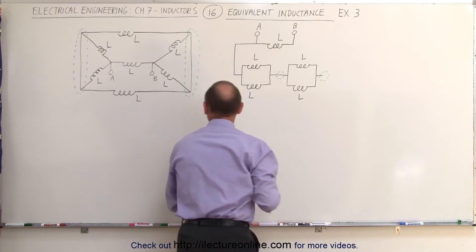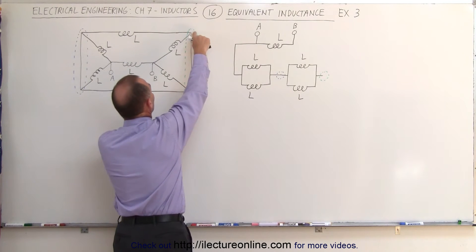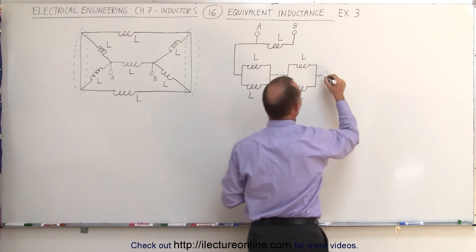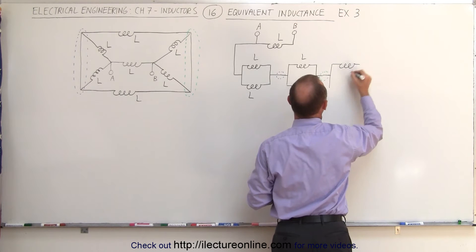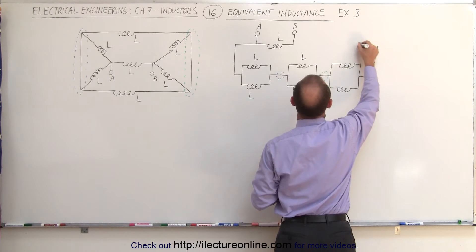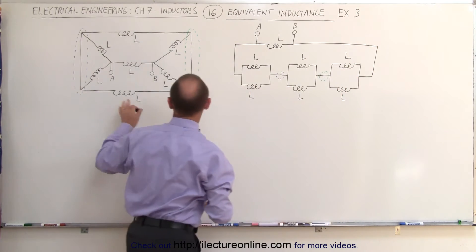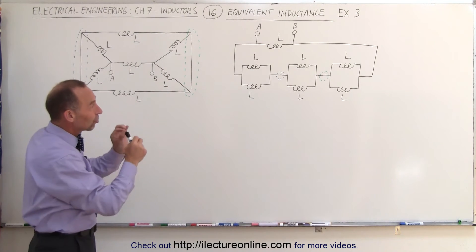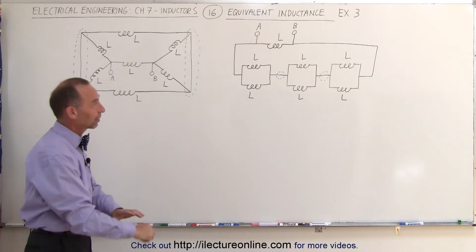Finally, we can go back from this point, which is considered a single branch point, through either one of these inductors to get back to B. That means we again have a branch point — two possible paths, each with an inductor with inductance L — before we get back to B. This is the equivalent circuit. All the same inductors are there in the same hookup, just drawn differently, so you can much more easily see how to find the equivalent inductance of that particular circuit.